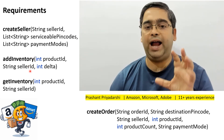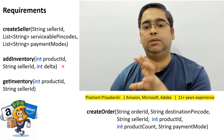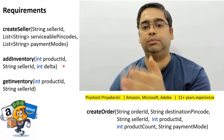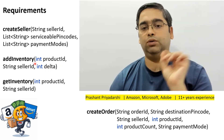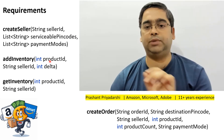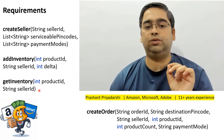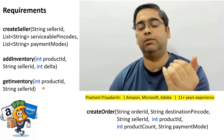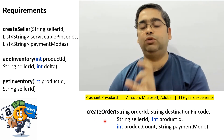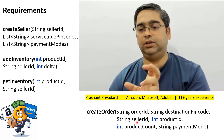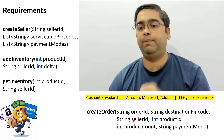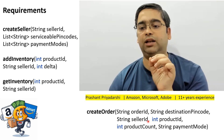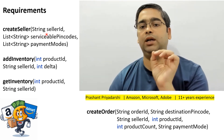A seller should also be able to add inventory for a particular product. For example, if a seller bought 50 Samsung Galaxy M35 smartphones, they should be able to add 50 to the inventory for that product ID. Sellers should also be able to see how much inventory they have left for a particular product, so they can decide whether to get more stock. Customers should be able to create orders for products from a given seller, with a destination pin code that must be serviceable by that seller.